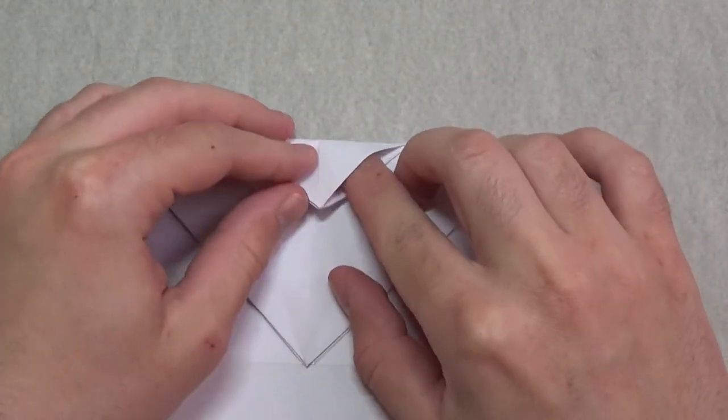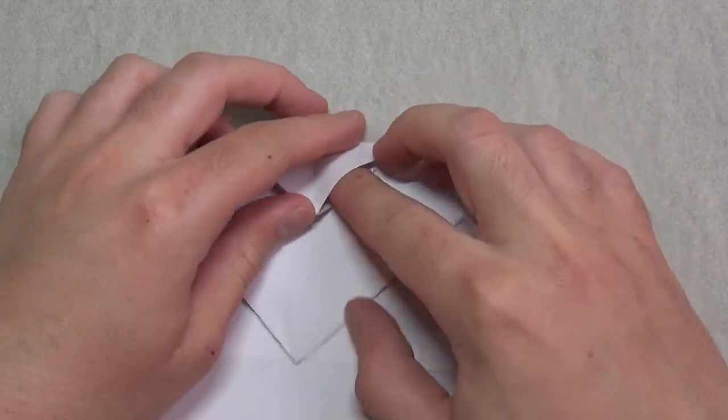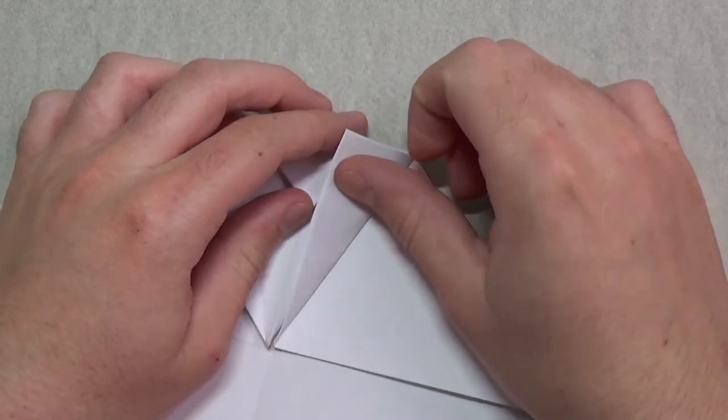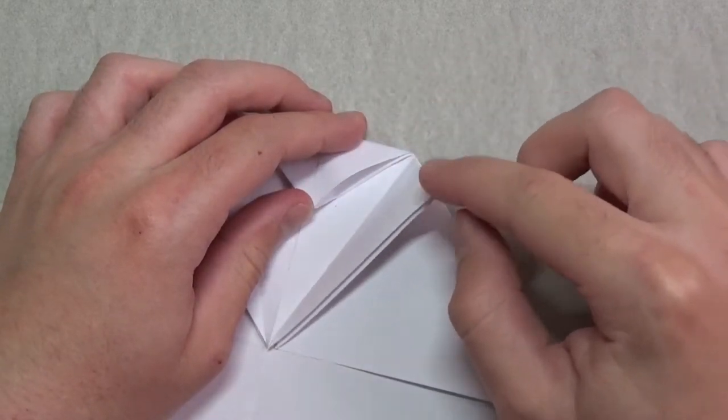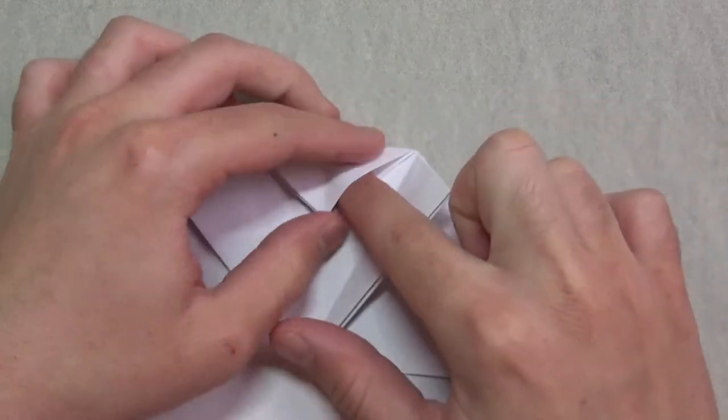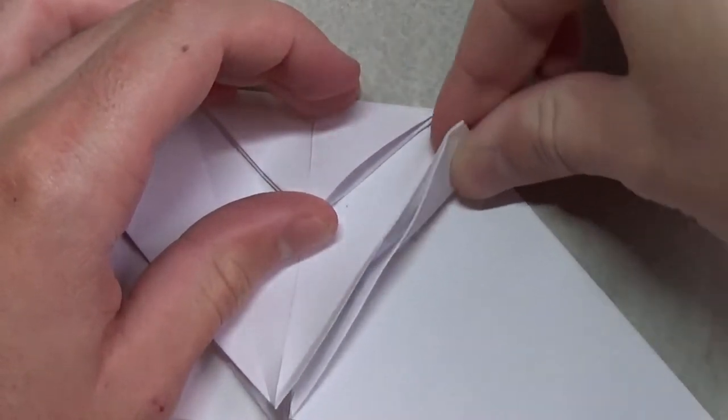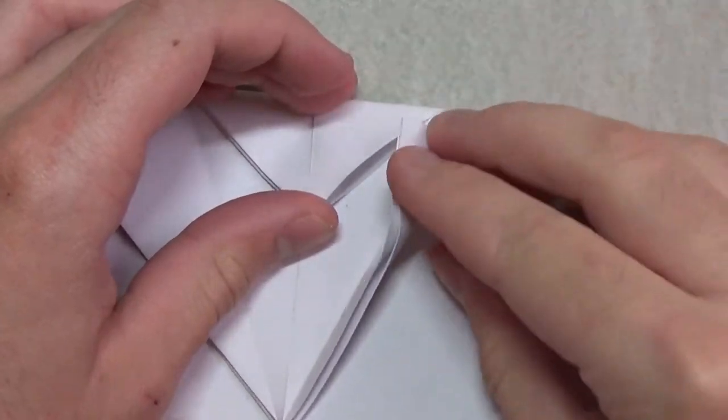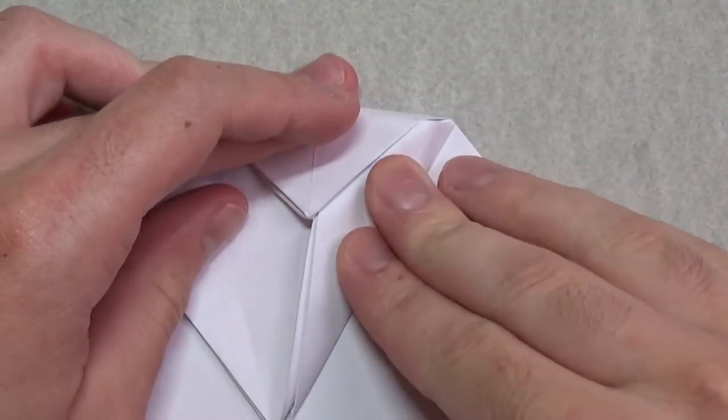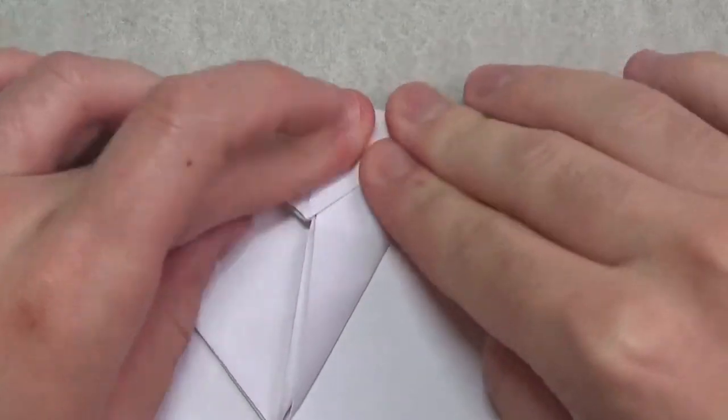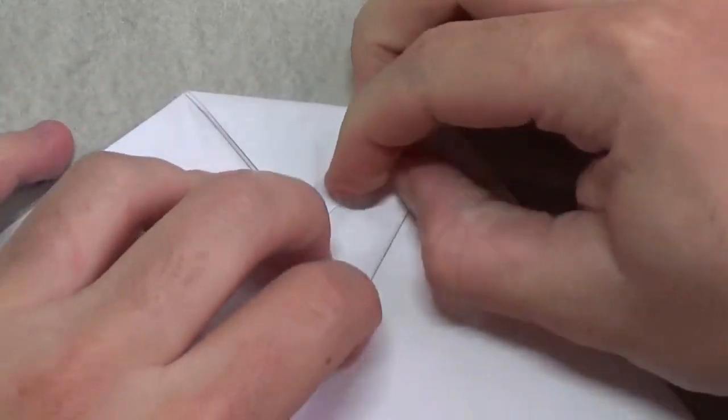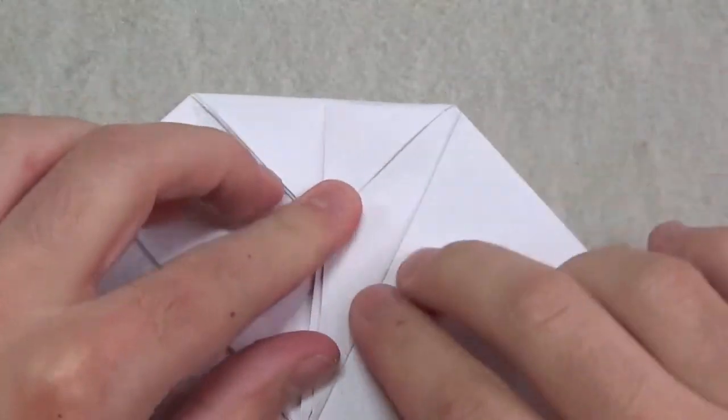Now comes the hardest step. We're going to open this pocket right here and we're going to refold this, but tucking this point into this pocket. I'm going to zoom in so you can see. Like this. Just kind of curl it a little bit so it makes it easier, and then just stick it into that pocket. Like that. Then flatten everything. That's what it looks like.